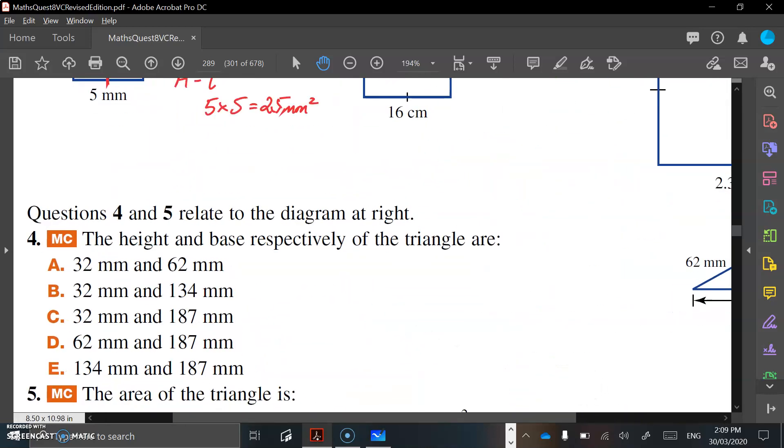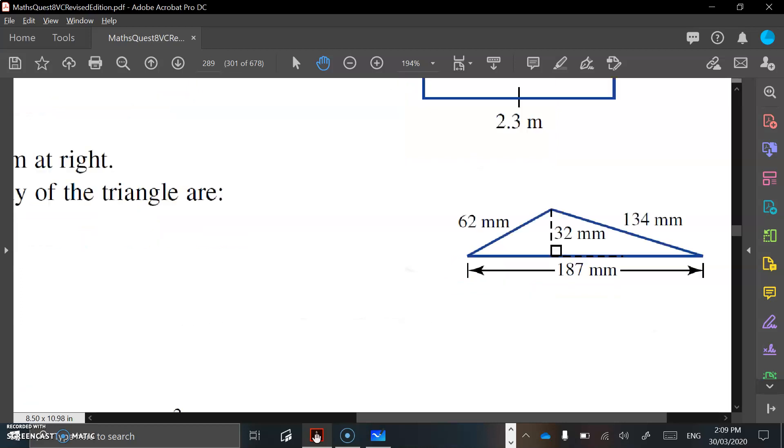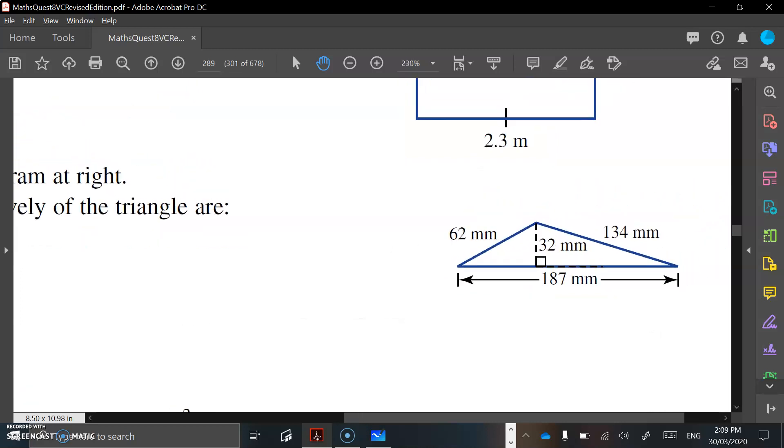Let's look at this triangle over here, and we've got numbers all over the place. We've got 62 for this diagonal, we've got 134 for that diagonal, we have 187 for that. Remember, the area of a triangle is your base times your height divided by 2.